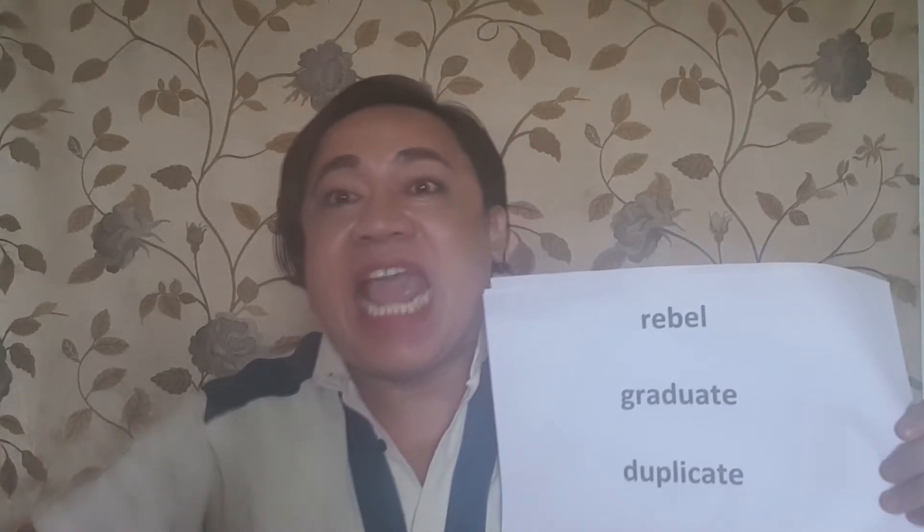Duplicate — noun — is the actual thing, the product of the duplication process. Duplicate — verb — is the act of duplicating. Certificate is the noun — the document. Certificate is the verb — the process of making the certificate.